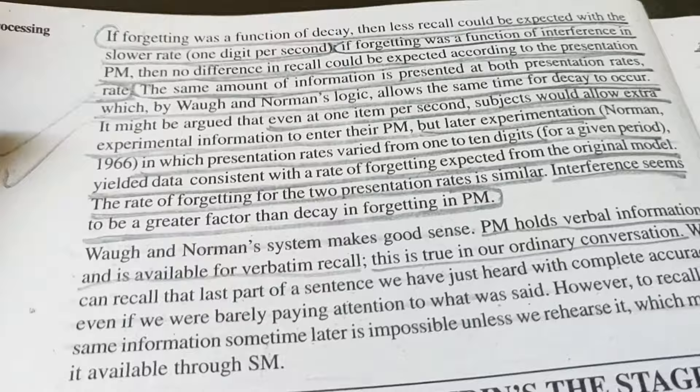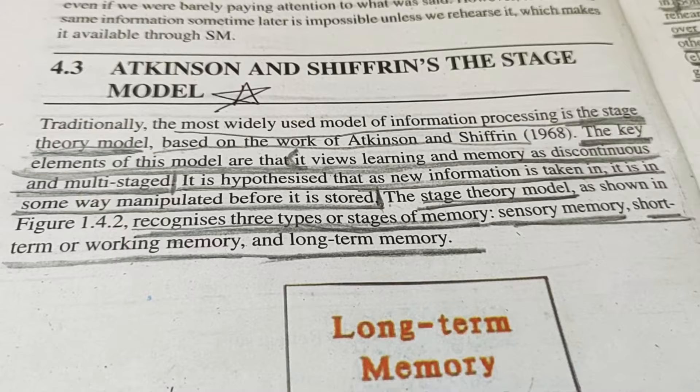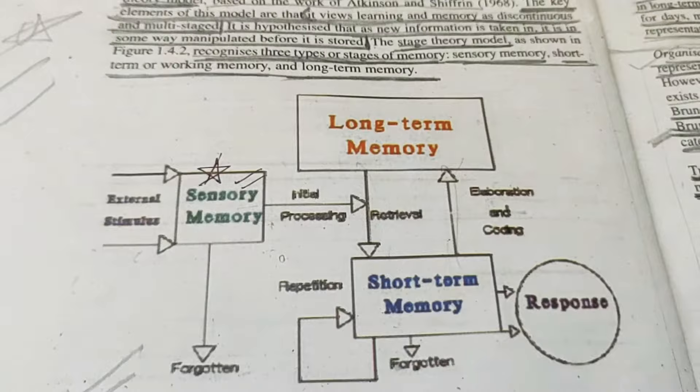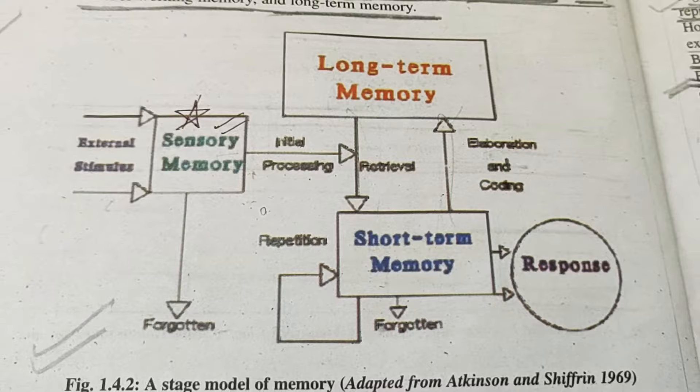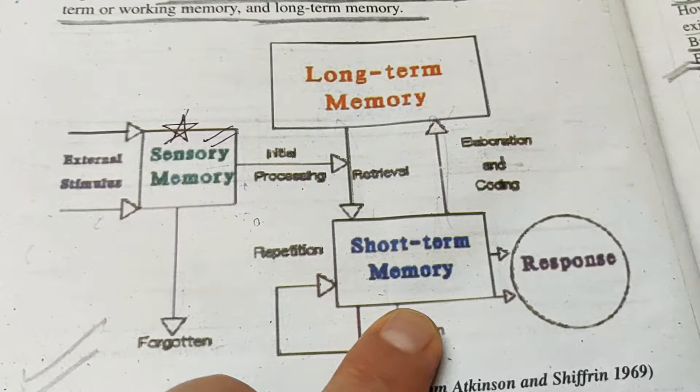This was a very important topic. You have to prepare it well. Next is Atkinson and Shiffrin's Stage Model. You have to make this diagram — it is very important and has come in previous exams. If you make pictures or flowcharts, you will automatically get better marks. The diagram shows three parts: sensory memory, after that short-term memory, and then long-term memory, written in three stages.